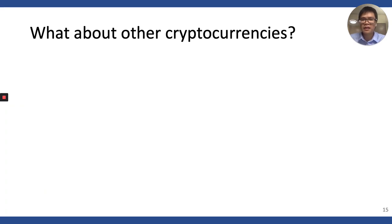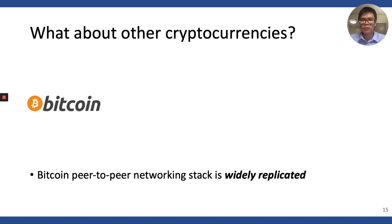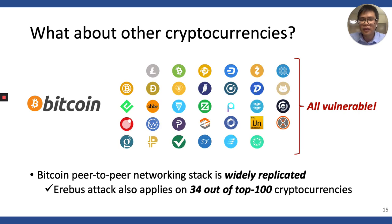We have seen that Bitcoin is vulnerable to the EREBUS attacks. What about other cryptocurrencies? Can EREBUS attacks also work against them? We found that the peer-to-peer network implementation of Bitcoin is widely replicated in many other blockchain projects. In fact, we found that at least 34 of the top 50 cryptocurrencies copy the implementation of Bitcoin. For this reason, all of them are potentially vulnerable to the EREBUS attacks as well.